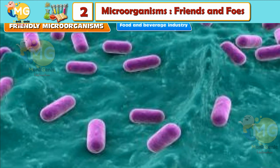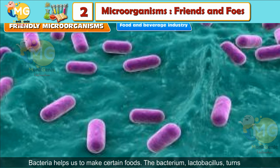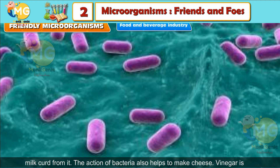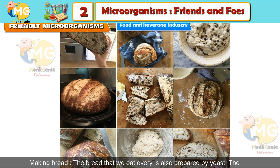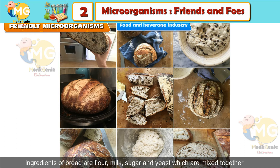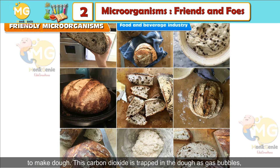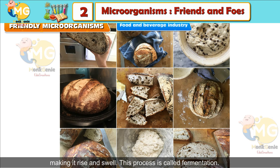Food and Beverage Industry: Bacteria help us to make certain foods. The bacterium Lactobacillus turns milk into curd. The action of bacteria also helps to make cheese. Vinegar is also made by the action of bacteria. They are also used to make tea, coffee and cocoa. The bread we eat every day is also prepared using yeast. Flour, milk, sugar and yeast are mixed together to make dough. The carbon dioxide produced is trapped in the dough as gas bubbles, making it rise and swell. This process is called fermentation.